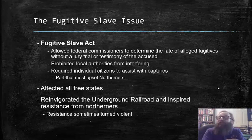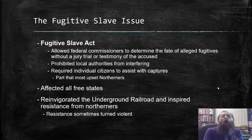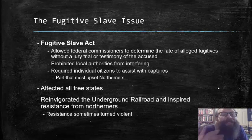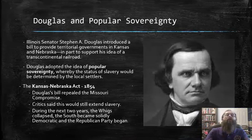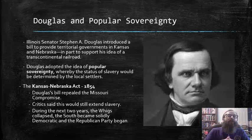This was the part that most upset northerners, who generally had wanted nothing to do with returning fugitive slaves to their southern masters. The Fugitive Slave Act affected all free states, and had the result of reinvigorating the Underground Railroad and inspiring new resistance from northerners — resistance that sometimes turned violent itself.